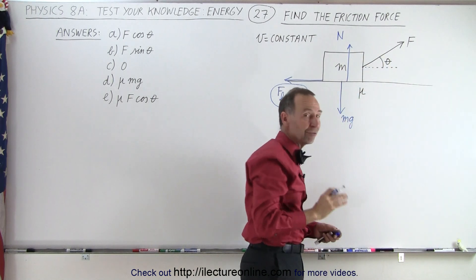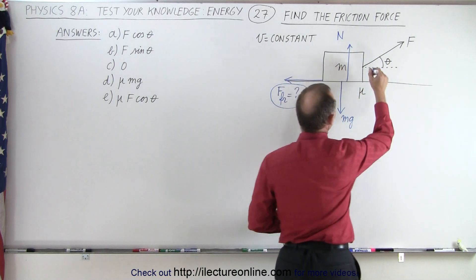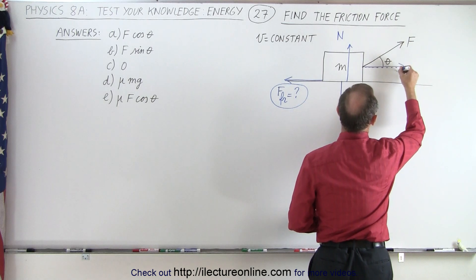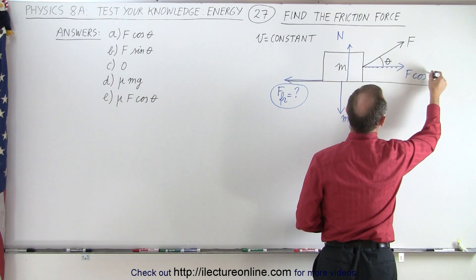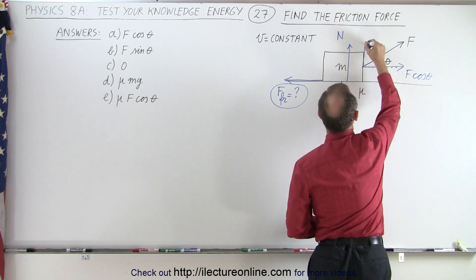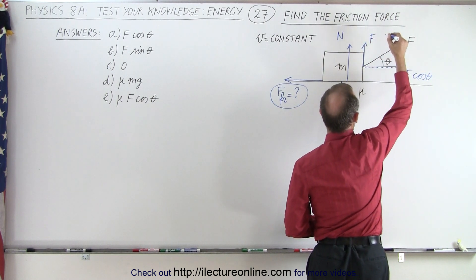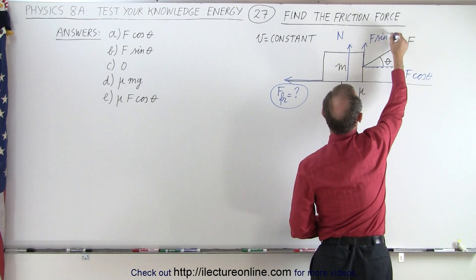But notice before we can figure out what the normal force is equal to, we're going to go ahead here and find the components of the force. So we have the force this way which is a little bit too long. This would be F times the cosine of theta and this component right here which would be F times the sine of theta.